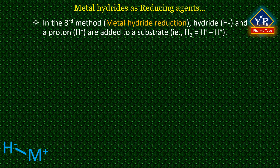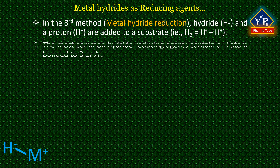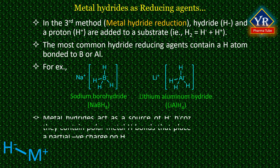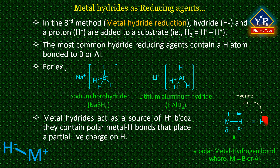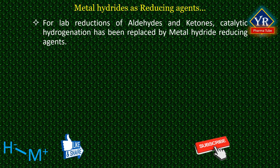The third mechanism is to deliver the equivalent of two hydrogen atoms by adding a hydride ion and a proton. The most common hydride reducing agents contain a hydrogen atom bonded to boron or aluminium, for example sodium borohydride and lithium aluminium hydride. Metal hydride reagents act as a source of hydride ion because they contain polar metal-hydrogen bonds. These agents deliver hydride ion to a substrate, and then a proton is added from water or an alcohol.